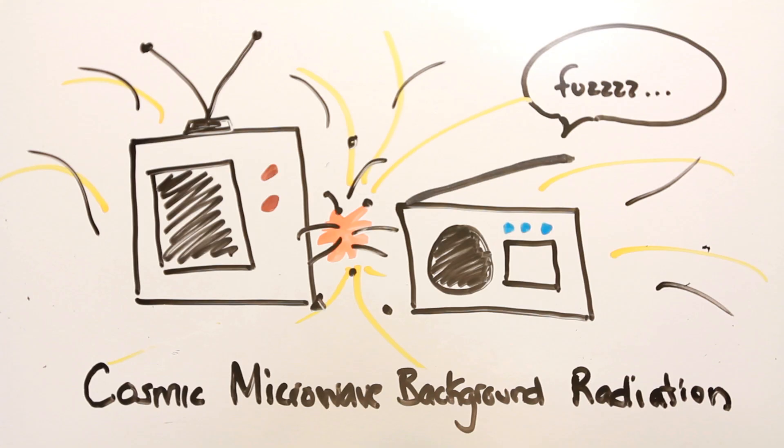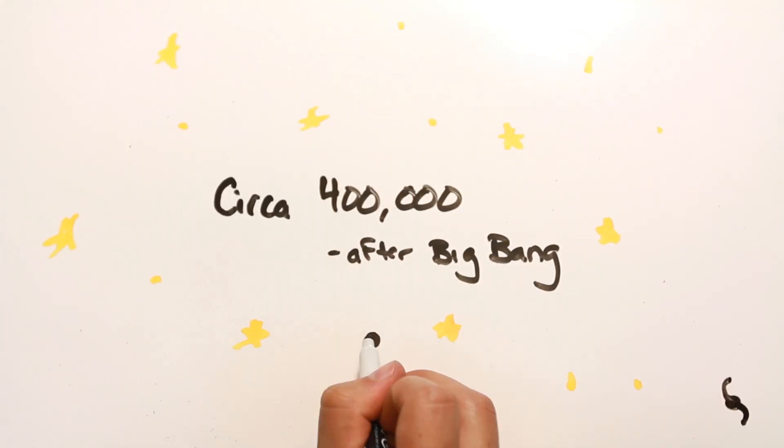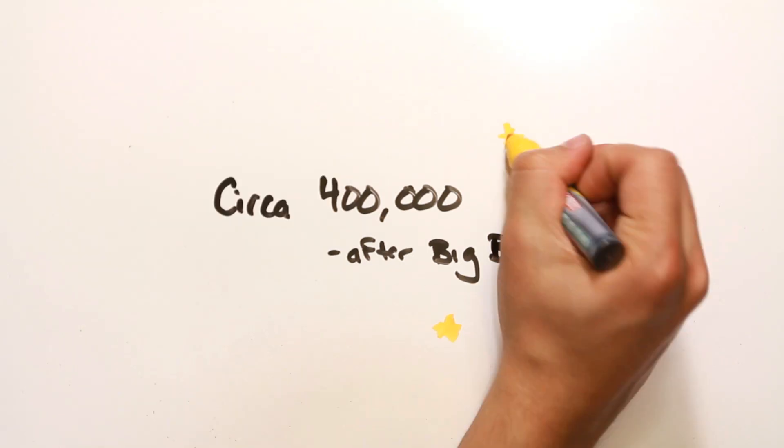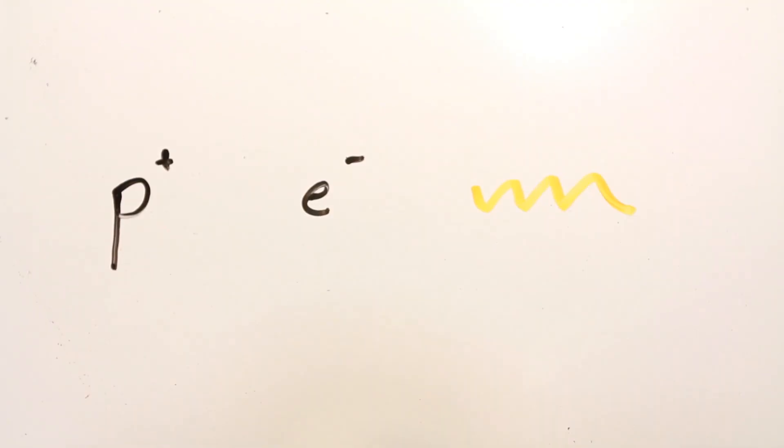Without trying to explain the Big Bang in full, about 400,000 years after it began, long before planets and stars formed, the universe was filled with a gas of protons, electrons, and photons.